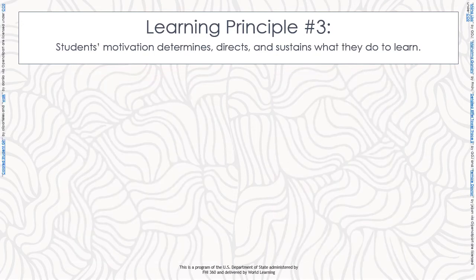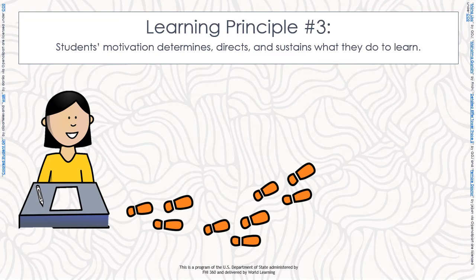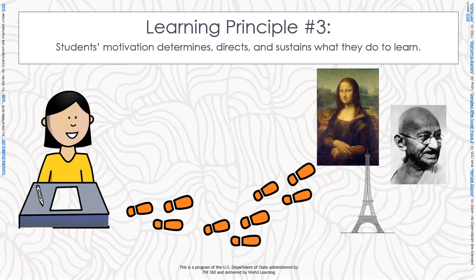Learning principle number three: students' motivation determines, directs, and sustains what they do to learn. Without motivation, learning does not move forward. The stronger the motivation, the more learning we can expect. There are many kinds and sources of motivation. A teacher needs to know his or her students in order to tap effectively into their motivations. This includes relating examples in class to topics, art forms, people, and events that are of interest to the students. A teacher can also remind students how what they are learning now will allow them to do what they want to do in the future.